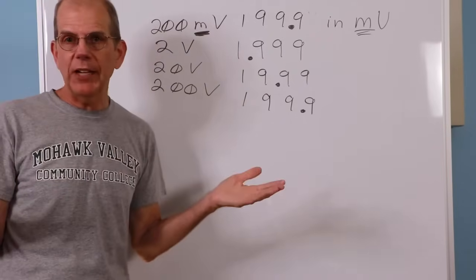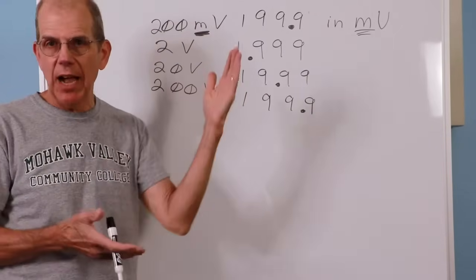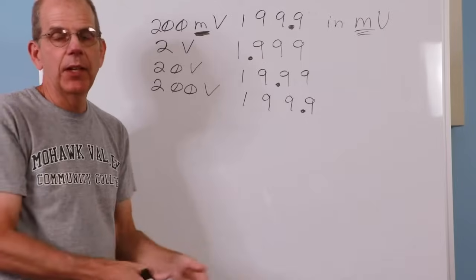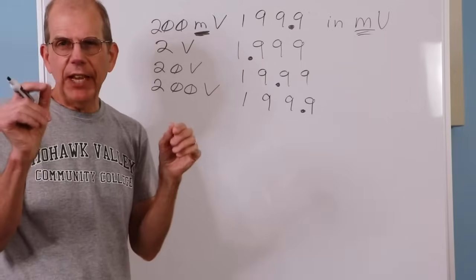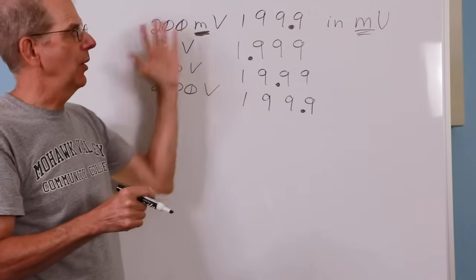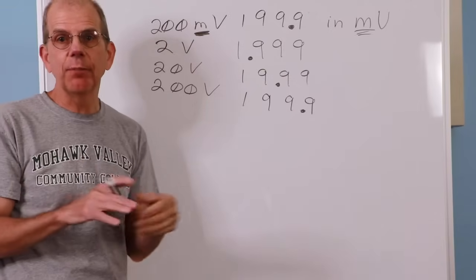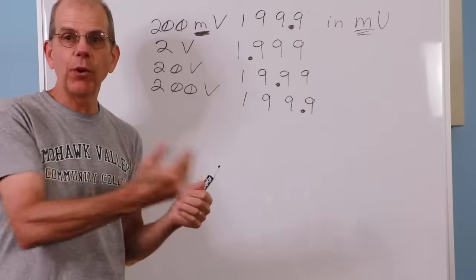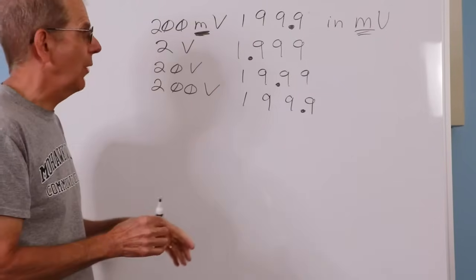Some meters are auto-ranging. They'll automatically figure out which scale is best and jump to there. There are some special cases where that's not good. So if you do pick up an auto-ranging meter, it's always good to make sure that it has sort of an override where you can force a certain scale.